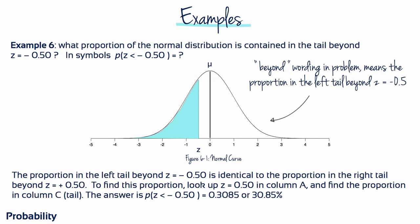Example 6: What proportion of the normal distribution is contained in the tail beyond z equals negative 0.5? Make a rough sketch and mark z equals negative 0.5. The 'beyond' wording means the proportion is in the left tail beyond z equals negative 0.5. The proportion in the left tail beyond z equals negative 0.5 is identical to the proportion in the right-hand tail beyond z equals plus 0.5. Look up z equals 0.5 in column A and find the proportion in column C. The answer is 0.3085 or 30.85%.